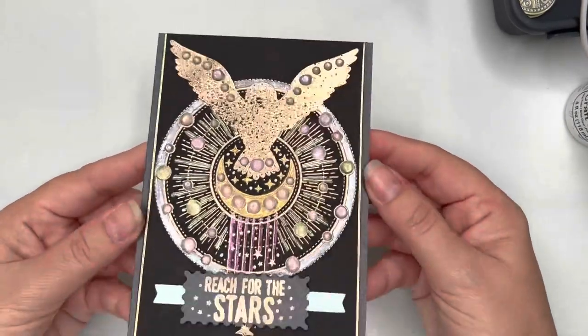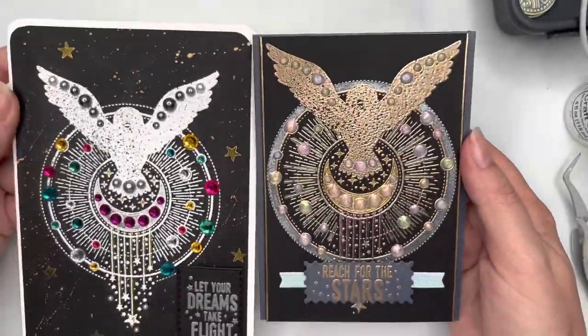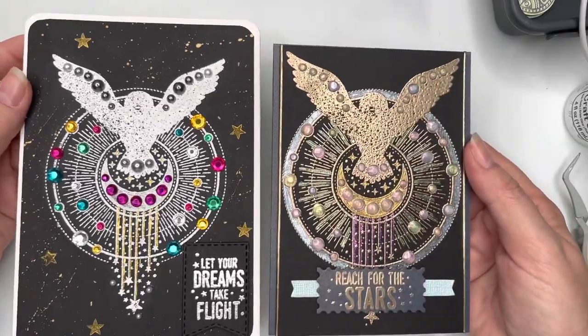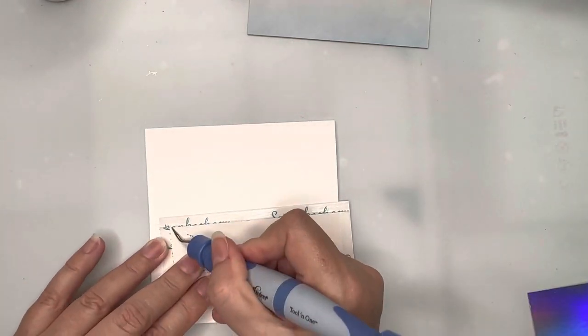Here is the second card I've made using the same stamp set but I've heat embossed that with the white opaque embossing powder. Card number four: I'm going to make myself an easel card. So I've cut a square base.